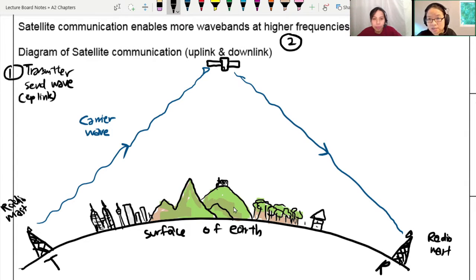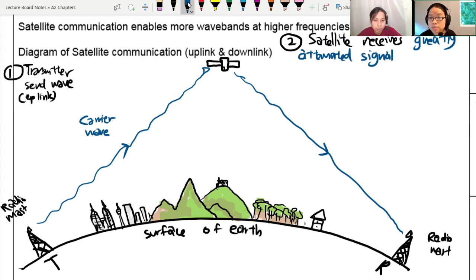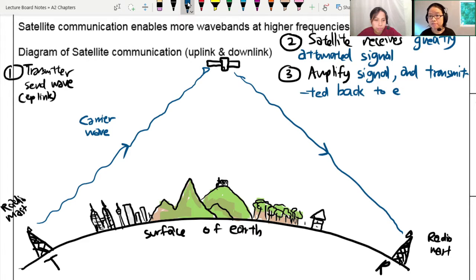When the satellite receives the signal, because the satellite is so far away, by the time they receive the signal, the signal will be greatly attenuated. The intensity is very small. This is no good. We cannot send a weak signal down to ground again. So what are we going to do? We will amplify the signal. So then the signal is amplified and transmitted back to earth. Inside the satellite itself, there's a circuit that receives from the transmitter and amplifies the signal before sending it back down.